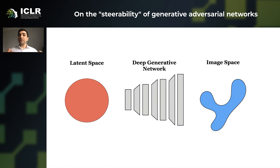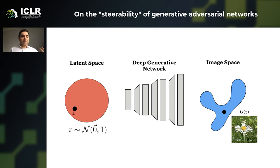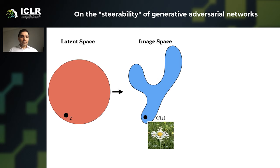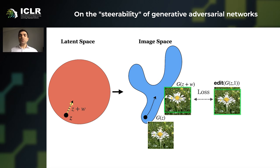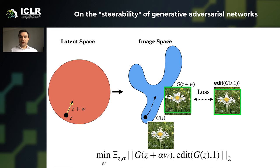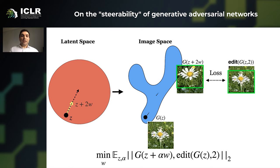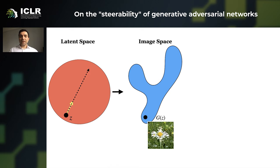If you think about the latent space of GANs — where you can sample vectors and GANs will map them to the image space — then we can think about steering. Suppose there is a direction W corresponding to a vertical shift in the image space. If we define our edit or target to be a shifted version of the image and try to minimize the loss between the edit and the generated image, we can take more steps and resemble more transformations.